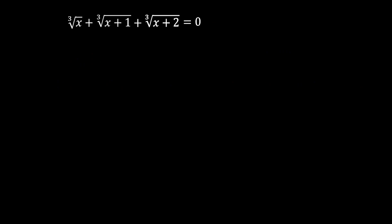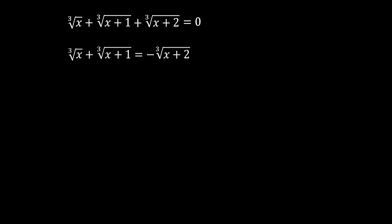Since we do not have three lives here, we are going to use the right method instead. The right method is to pick one of these three terms and put it on the right side of the equation. In this video, I will pick the third term, the cube root of (x + 2), and put it on the right side — of course changing its sign. From this we get: the cube root of x plus the cube root of (x + 1) equals minus the cube root of (x + 2).